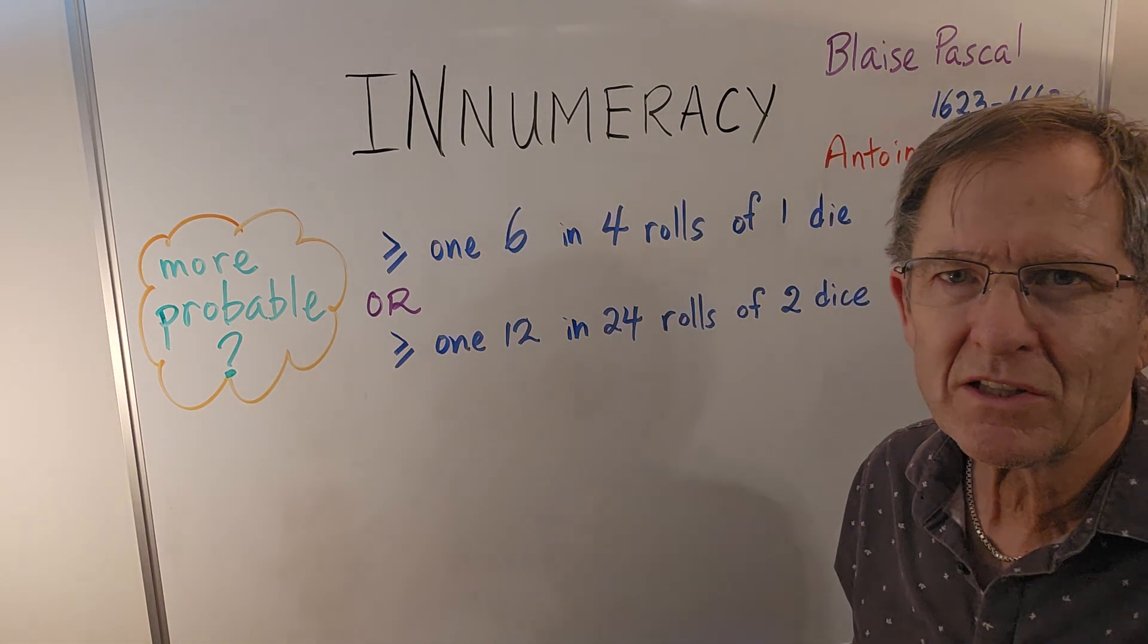Well this question was posed by French gambler Antoine Gombeau, who lived from 1607 to 1684, to Blaise Pascal, French mathematician and philosopher, who lived from 1623 to 1662. So I think it's fair to say the question was posed prior to his death, maybe in the previous twenty years sometime.